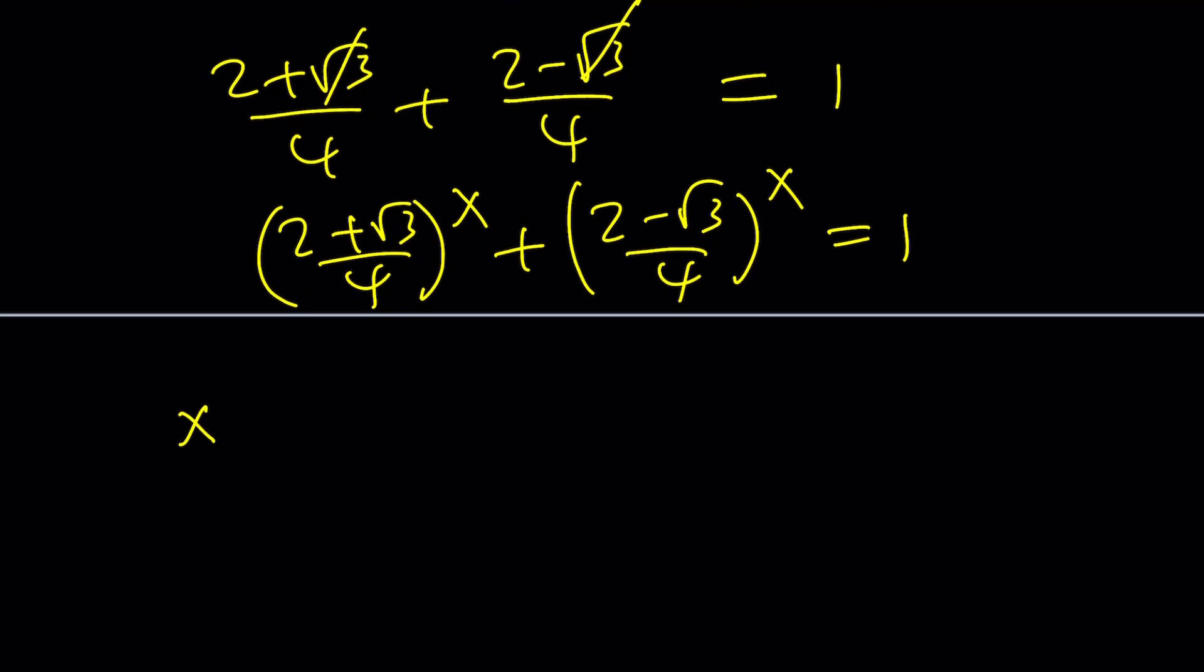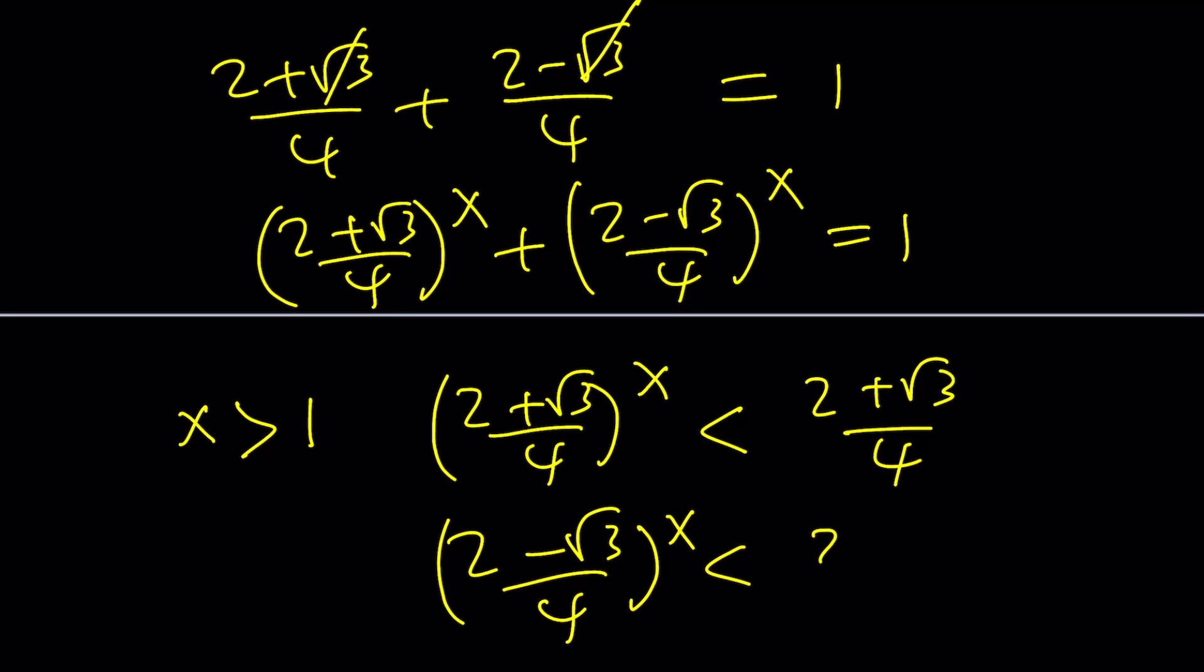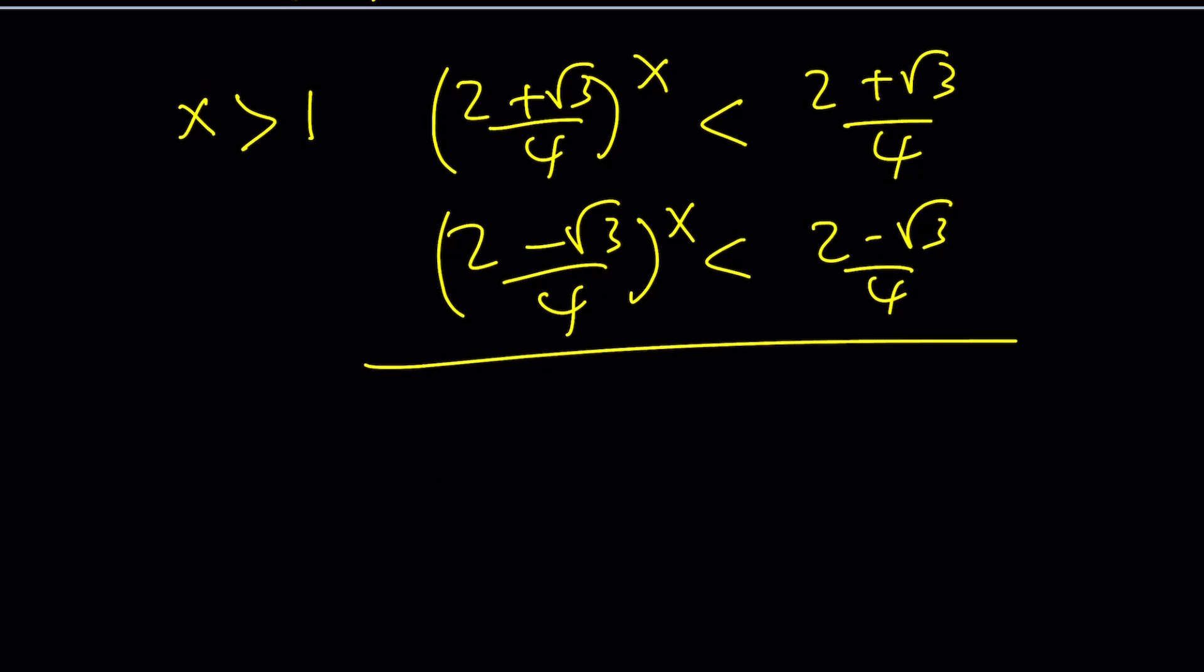Here's what happens. If x is greater than 1, then $\left(\frac{2+\sqrt{3}}{4}\right)^x$ is going to be—actually, since this is less than 1, it's going to be the other way around. This is going to be less than that. And when you do the same thing to the other base, same thing is going to happen. And when you add these two inequalities, you're going to get our expression is actually less than 1, which is impossible because when you add these, you get 1. So if x is greater than 1, we have no solution.